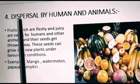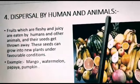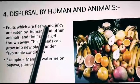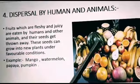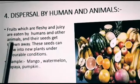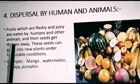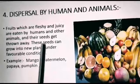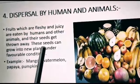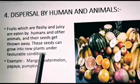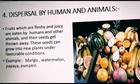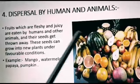Now we will discuss dispersion by humans and animals. Fruits which are fleshy and juicy are eaten by humans and other animals, and their seeds get thrown away. These seeds can grow into new plants under favorable conditions. Examples: mango, watermelon, papaya, pumpkin, etc.